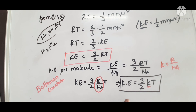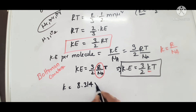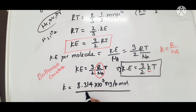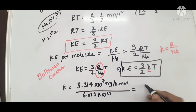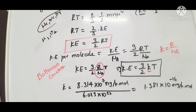The average kinetic energy of a molecule is 3 by 2 KT, where K is the Boltzmann constant. The value of Boltzmann constant K equals R by N_A: 8.314 × 10⁷ ergs per Kelvin mole divided by 6.023 × 10²³, giving 1.381 × 10⁻¹⁶ ergs per Kelvin. This is the value of Boltzmann constant. All these things come under kinetic theory and derivation of kinetic gas equations. Thanks for watching.